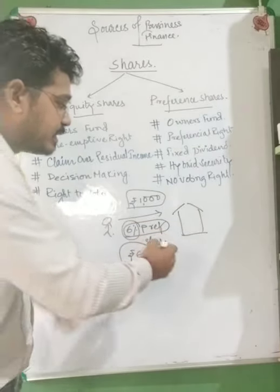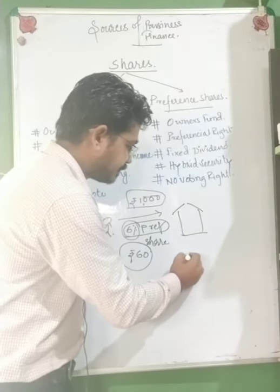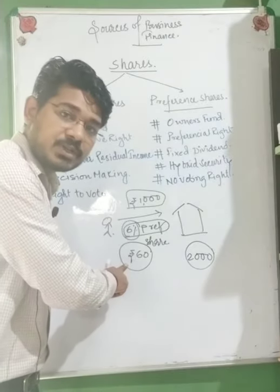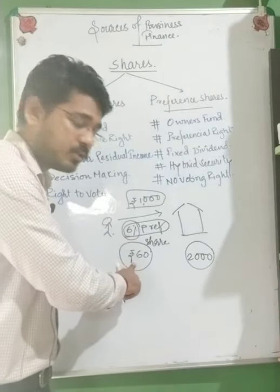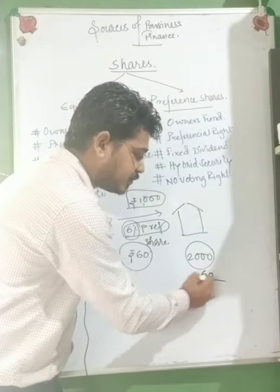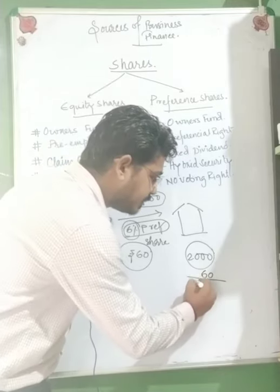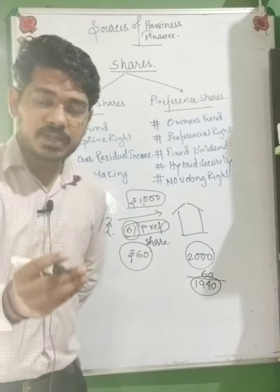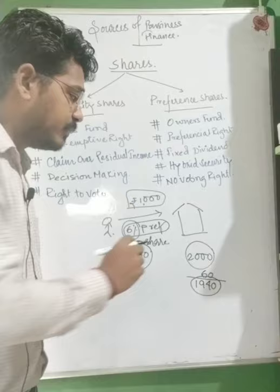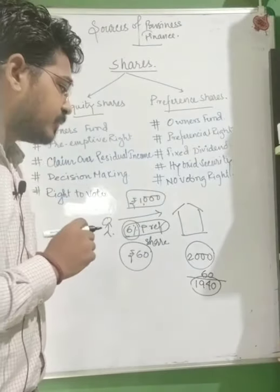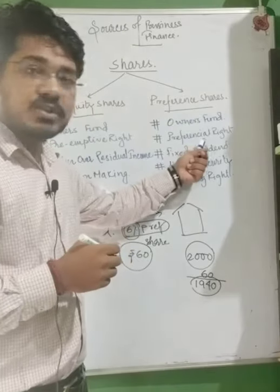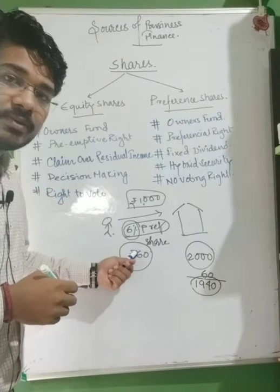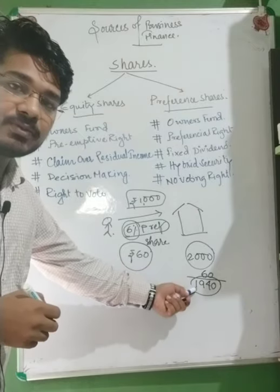Suppose the company has made a profit of ₹2000, and you, being a preference shareholder, are supposed to get ₹60 as dividend. Deducting ₹60 from the total profit of ₹2000 leaves ₹1940, and this ₹1940 is the residual income which will be distributed amongst the equity shareholders. So this explains the concept of fixed dividend for preference shareholders — the rate is fixed and they receive dividend at that fixed rate, and we also understood the concept of residual income.